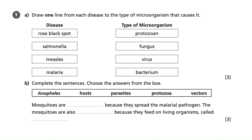Question 1A: draw one line from each disease to the type of microorganism that causes it. We can see the diseases are on the left and the types of microorganism are on the right.